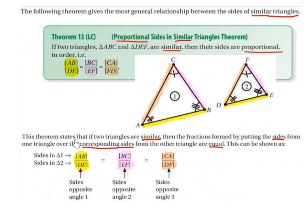This theorem states that if two triangles are similar, then the fractions formed by putting the sides from one triangle over the corresponding sides from the other triangle are equal. The sides in triangle 1 are AB, BC, CA, and the sides in triangle 2 are DE, EF, and DF. So AB divided by DE equals BC divided by EF equals CA divided by DF.